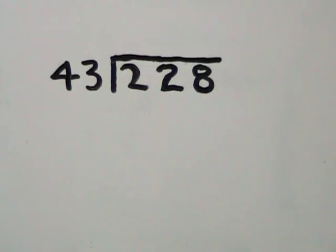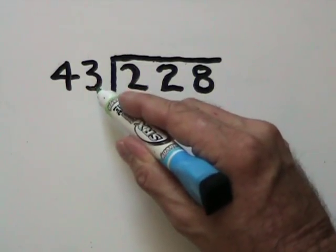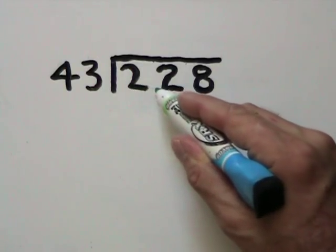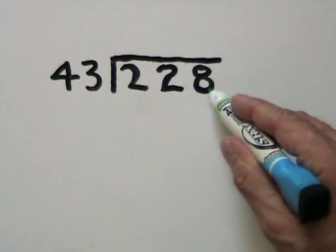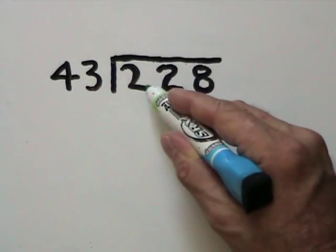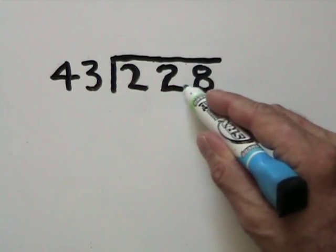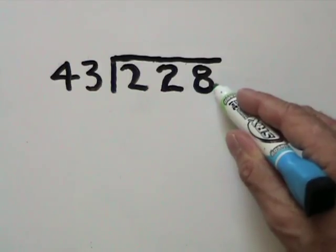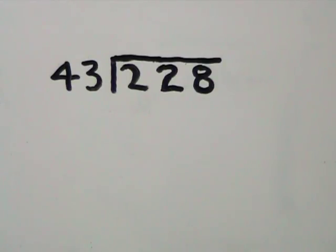Sometimes we'll have a division problem where our divisor will only go into the entire dividend. In other words, 43 is too big for the first two digits. It will only go into the entire dividend.